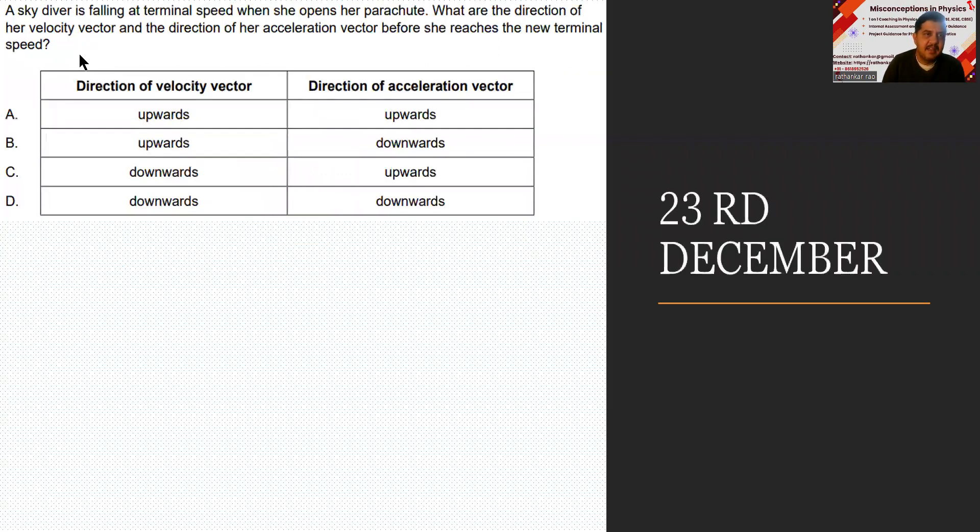Let us move on to the next one. A skydiver is falling at terminal speed when she opens her parachute. So this is my skydiver. What are the directions of the velocity vector and direction of the acceleration vector before she reaches the new terminal speed?